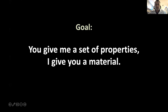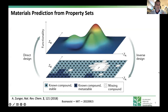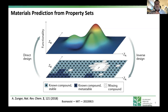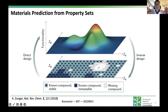Inverse design solves the inverse problem where we go from properties to the material—to the chemistry, stoichiometry, and structure, as Alex Zunger originally posed it. Borrowing from a recent Nature Reviews Chemistry article, this shows the framework for direct design: we have a CIF file for a compound containing atomic positions, stoichiometry, and chemistry—what elements are there—and then compute the functionality. Inverse design goes from functionality and property of interest back to chemical, structural, and stoichiometric space.